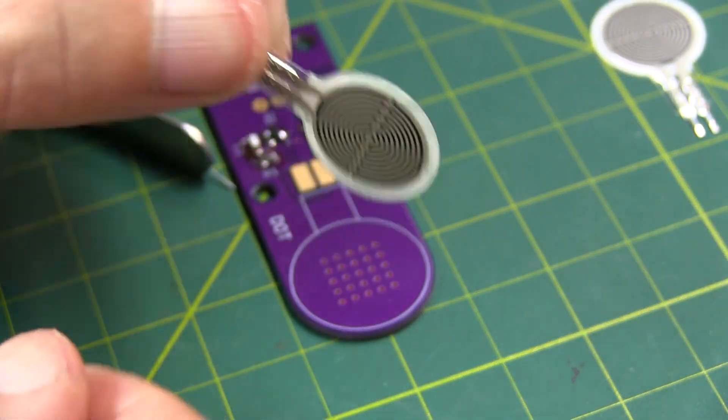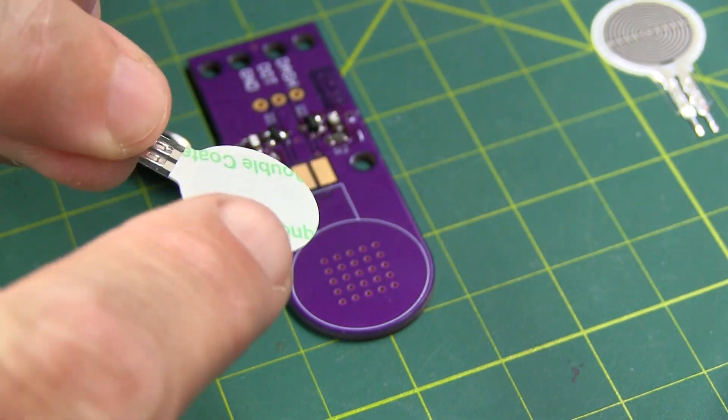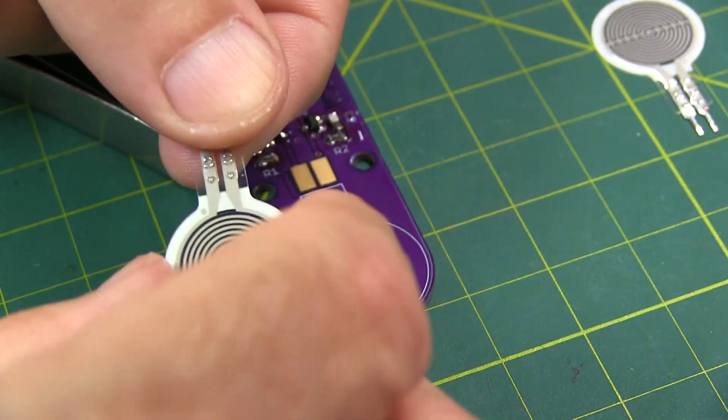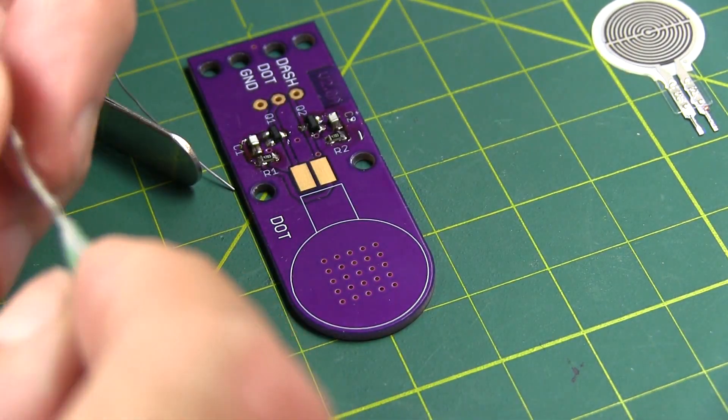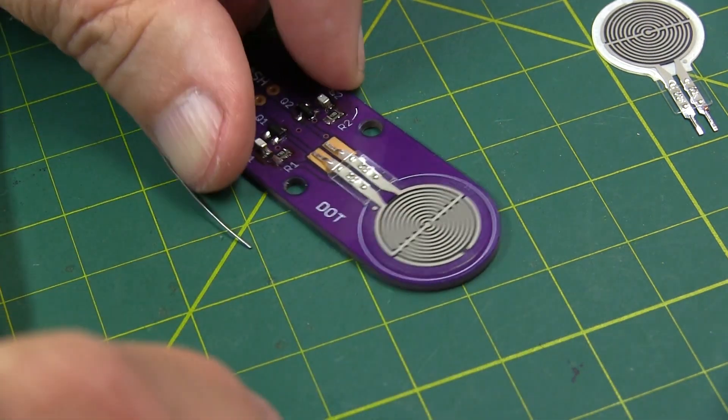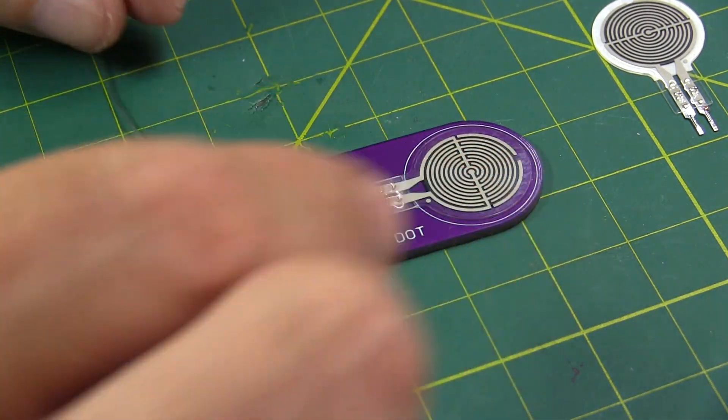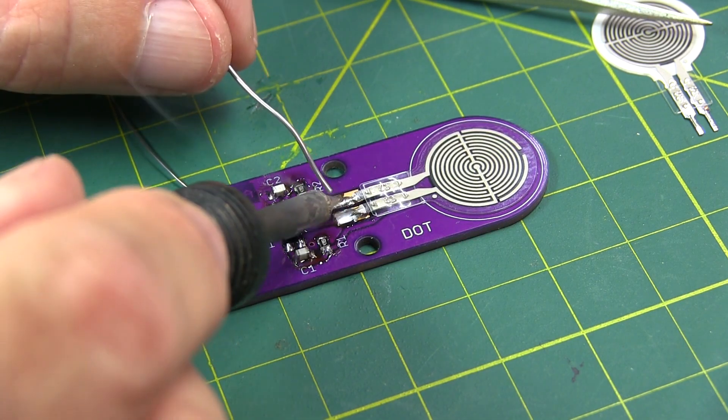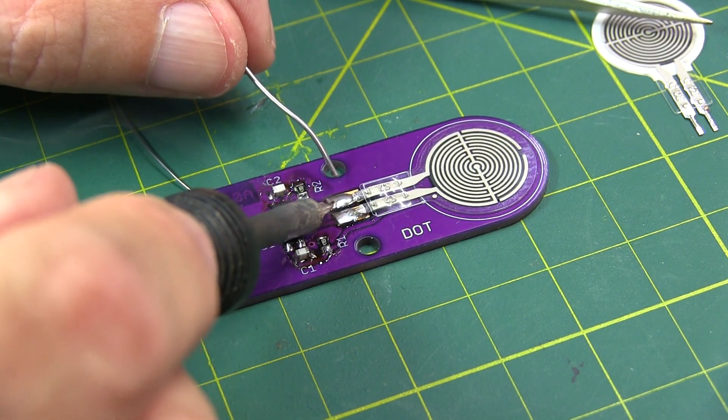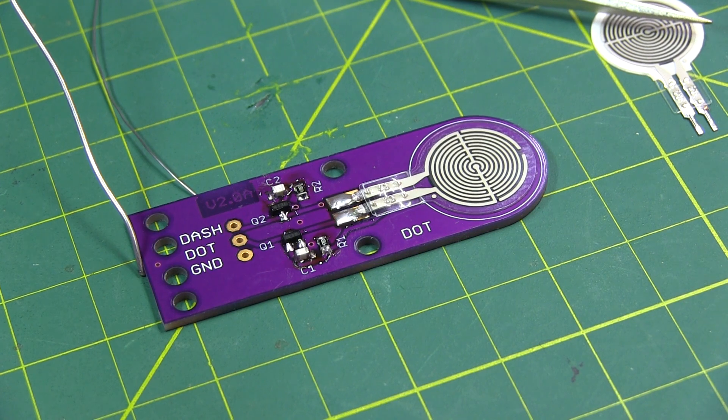Now these finger sensors have got an adhesive back, so we'll peel that adhesive backing off, stick it down, and then solder the two leads. That's now in place. And we'll solder these two leads in place. And we'll do the same thing on the other side.